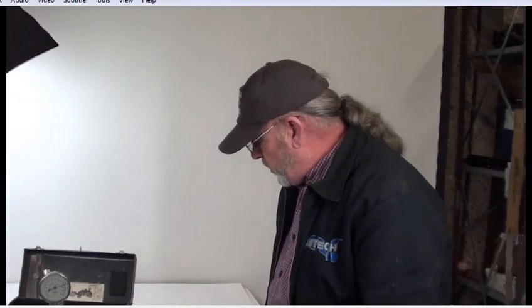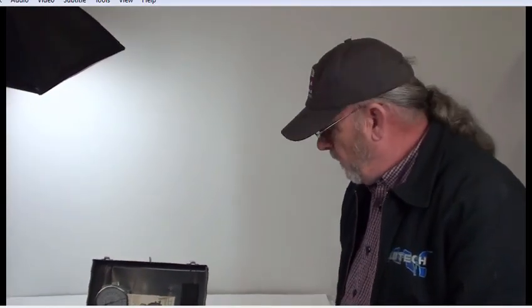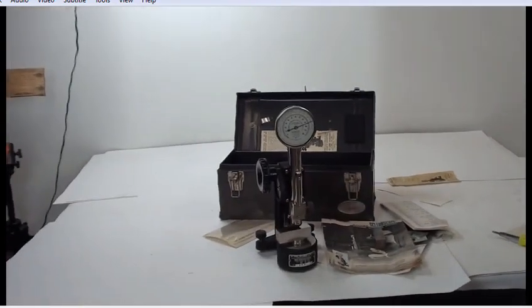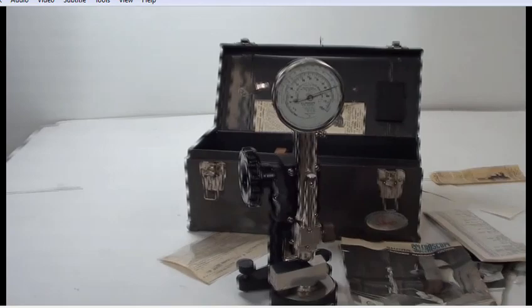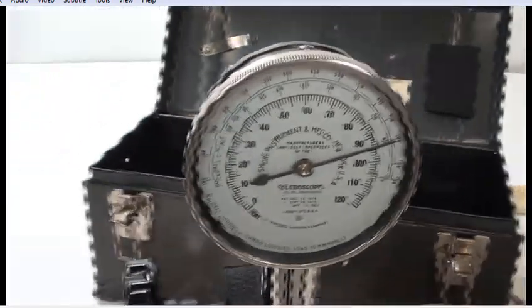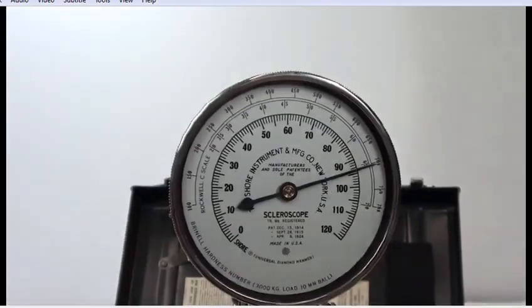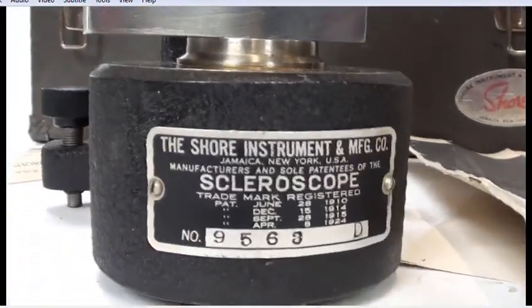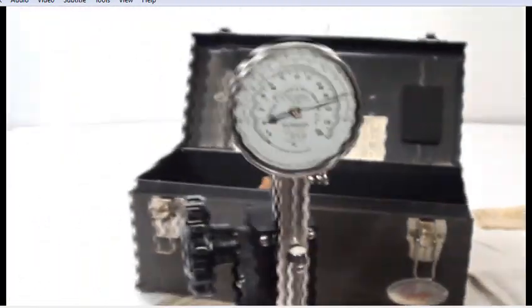Today we have a short instrument in manufacturing. This is a vintage scleroscope. It is a hardness tester with a dial indicator, and what we're going to show you today is how to reset the actual machine.